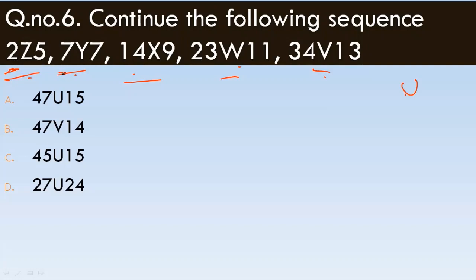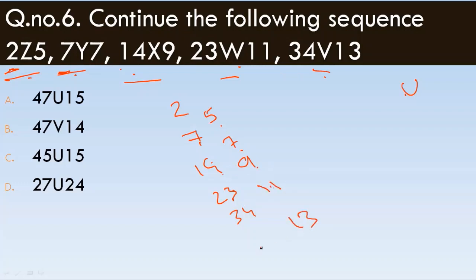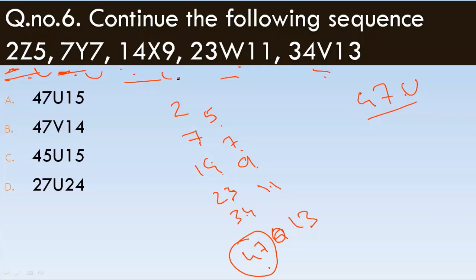The number pattern is 2, 7, 14, 23, 34. The differences between numbers are 5, 7, 9, 11, 13 — consecutive odd numbers. The next difference is 15, so 34 plus 13 equals 47. The next number is 47, the next letter is U, and with difference 15, the answer is 47, U, 15.